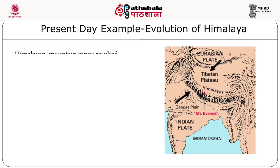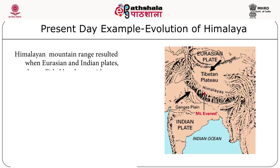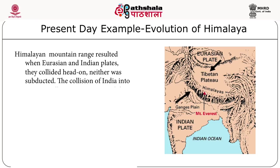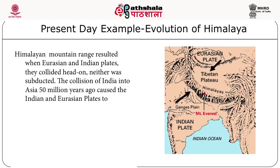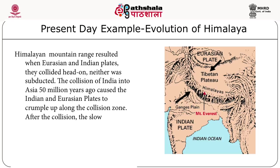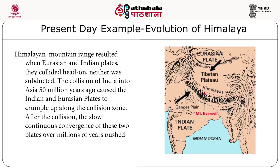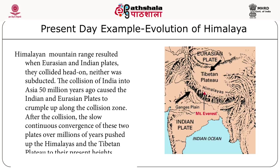Having covered various theories of mountain building and the concepts of plate tectonics, let us look at the evolution of the Himalaya as a present-day example. The Himalayan mountain range resulted when the Eurasian and Indian plates collided head-on, with neither being subducted. The collision of India with Asia occurred about 50 million years ago, causing the Indian and Eurasian plates to crumple up along the collision zone. The slow, continuous convergence of these two plates over millions of years pushed the Himalayas and the Tibetan plateau to their present heights.